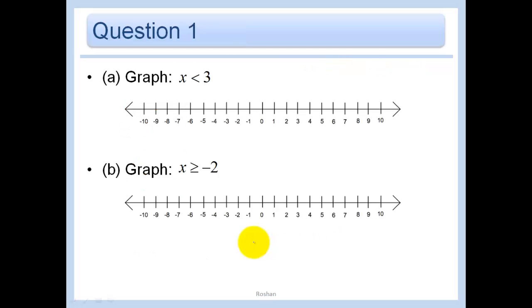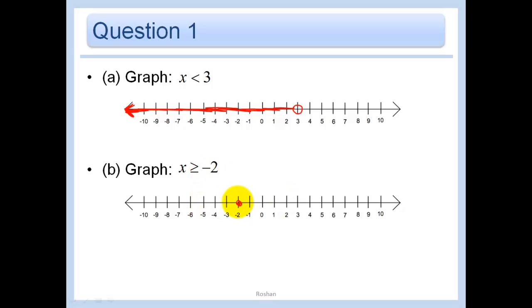So how would we graph X is less than three? X is strictly less than three, so it doesn't include three. We put an open circle and anything less should be shaded — shade the arrow to indicate it keeps going in that direction. X is greater than or equal to negative two would be a closed circle on negative two because it includes that, and anything bigger than or equal to that would be a solution.